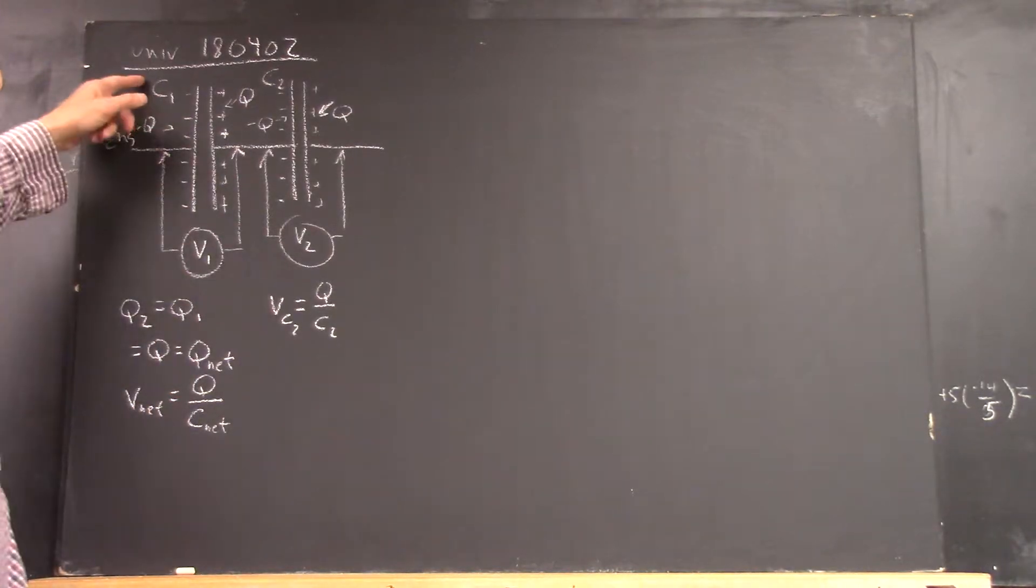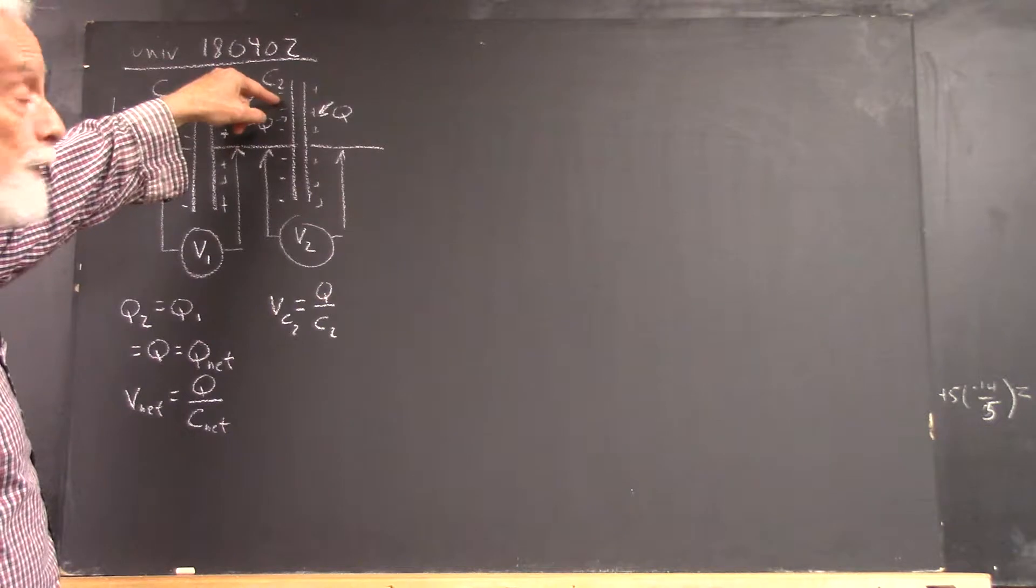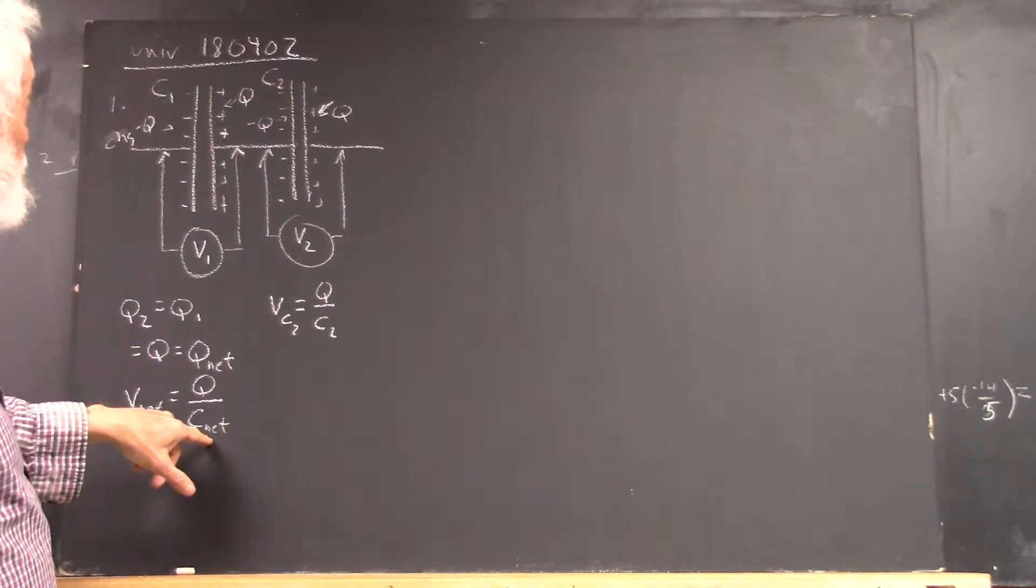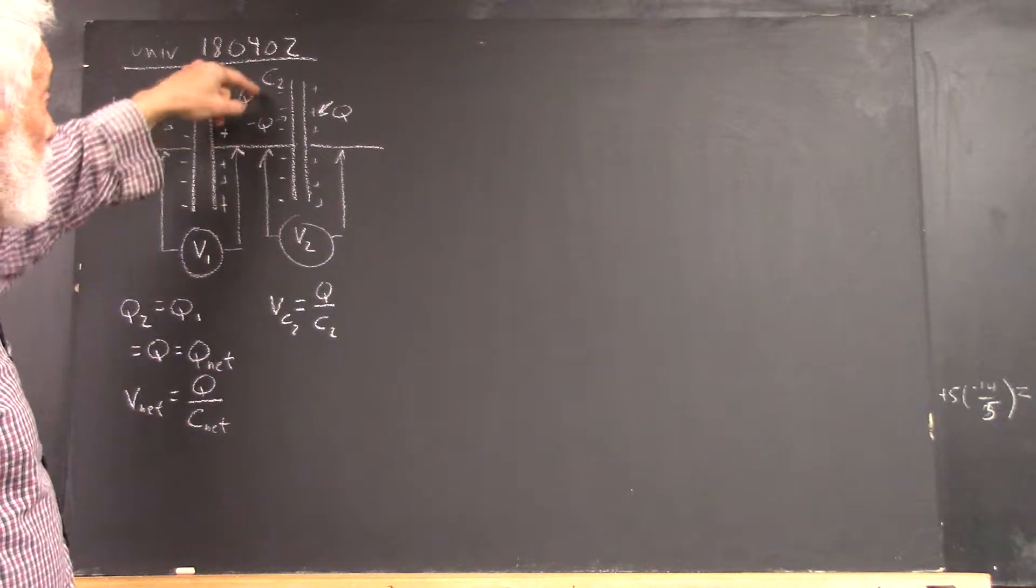So our given quantities are C1, V1, and C2. So we want to write the net voltage in terms of C1, V1, and C2.